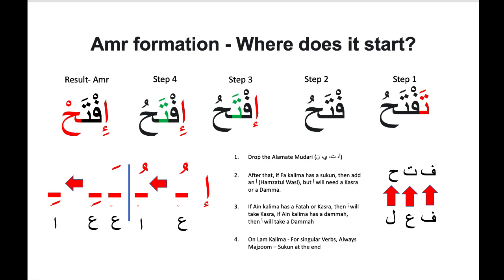So on step three, we have got iftahu. Looking at the final step, step four: our rule says lam kalima must have a sukun. In taftahu, according to our rule, lam kalima will have sukun. We have omitted the damma and it has become ha with sukun. So the word is now called iftah. The meaning now stands like this: fataha means 'he opened,' taftahu means 'you open or you will open,' but when amr is finally formed, iftah means 'open' — you open. It's an order, it's a request, it's a command: iftah.